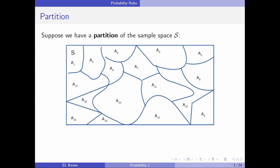Now we want to break this up into something that's a little different. Suppose we have a partition of a sample space. We take our sample space and we have a whole bunch of events in it, and the key is that none of the events overlap each other — they share nothing in common. And if I take all of the events and put them together, I get the entire sample space.